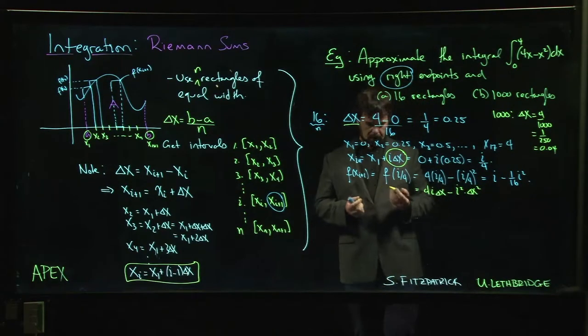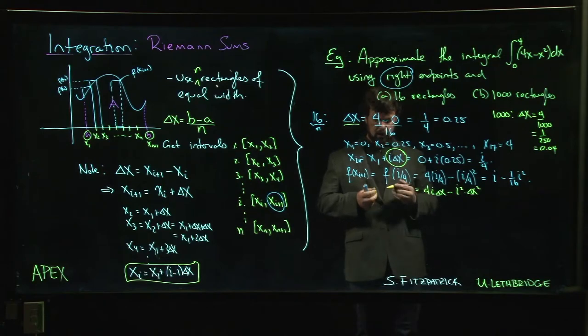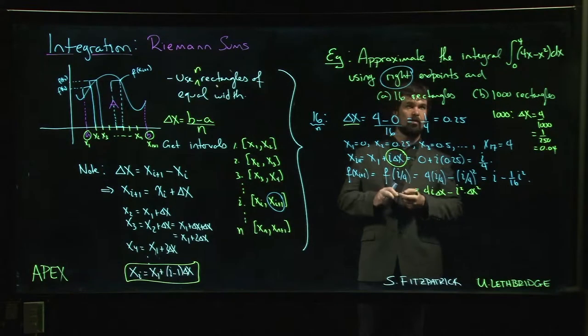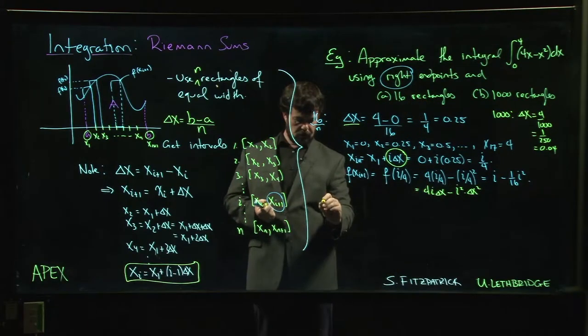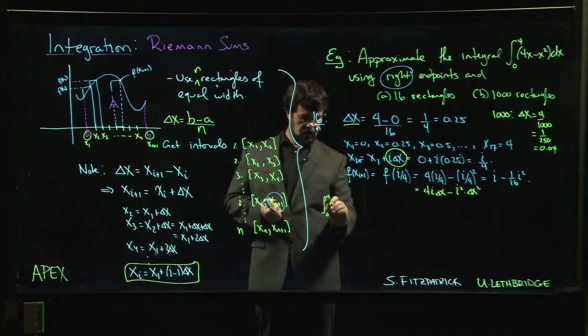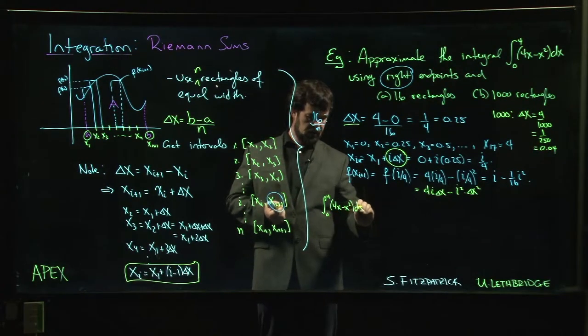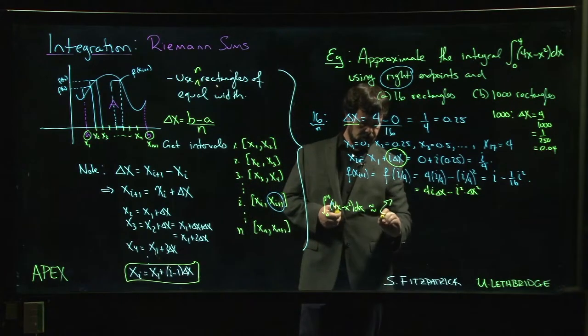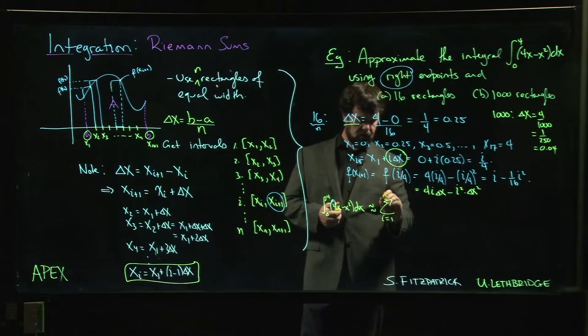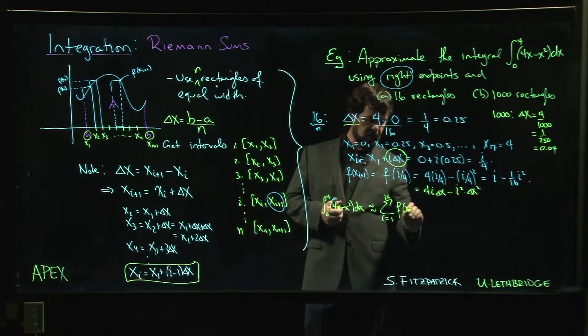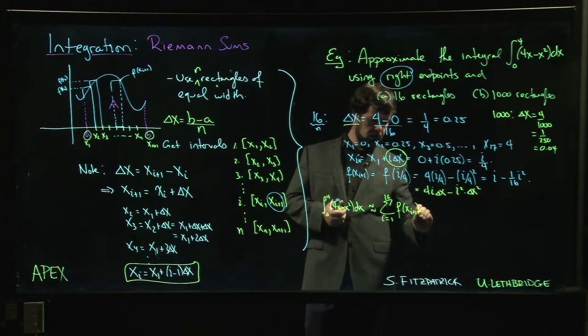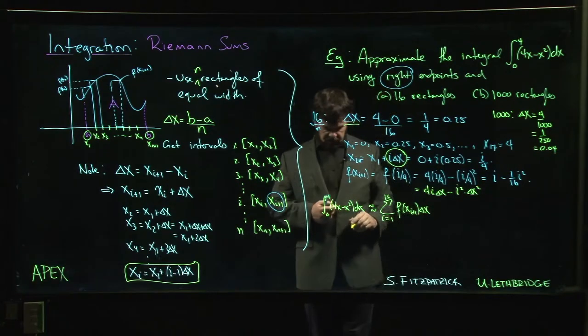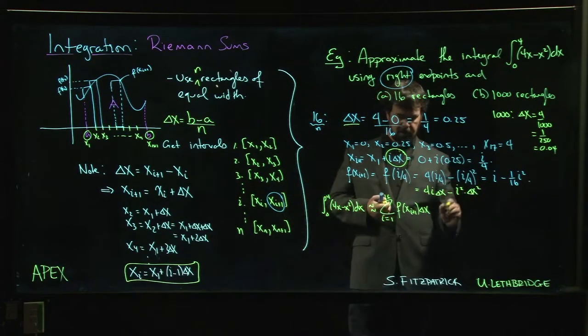Now we say, we're approximating the integral. The integral of 4x minus x squared dx is approximately the sum, i going from 1 to 16, of f(x_{i+1}) times delta x. So we multiply everything by delta x here.